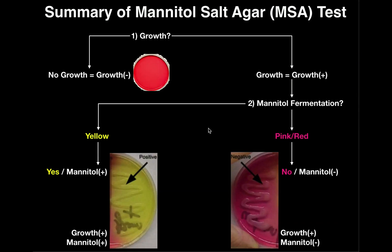Let's look at a summary flow chart to help determine the results of your mannitol salt agar. The first question you always ask is: is there growth? If there's no growth, it's growth negative, and the mannitol reaction is inconclusive, unknown, or not applicable. If there is growth — growth positive — we ask if there's mannitol fermentation. If the area around the colonies is pinkish red, the answer is no, mannitol negative. If the color is yellow around the colonies, the answer is yes, mannitol positive. So organisms with yellow would be growth positive, mannitol positive.